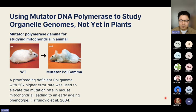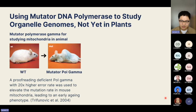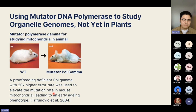Nearly 20 years ago, a strategy was already used to study animal mitochondrial genomes — another organelle containing DNA. They used a mutated version of DNA polymerase to study the animal mitochondrial genome, making a proofreading-deficient polymerase gamma with a 20-fold higher error rate, expressed in mice. This elevated the mutation rate in mouse mitochondria and led to an early aging phenotype, revolutionizing our understanding of animal aging.